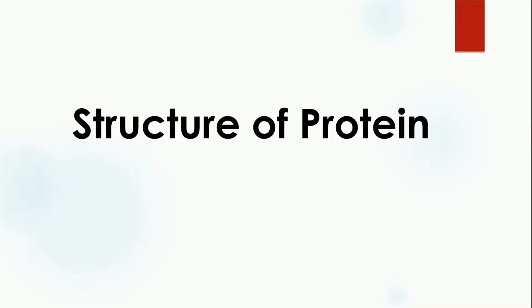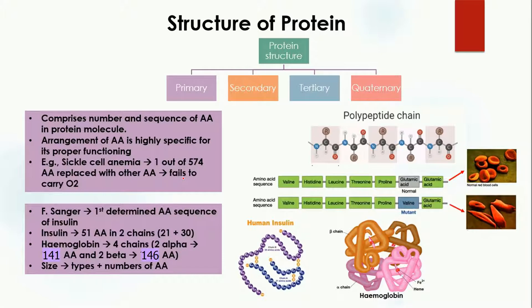Hello nerds, today's topic is about the structure of protein. We have already studied about the functions of protein and the structure of amino acids which combine together to form proteins. I will share the video link in the description and in the i-button. Today we are going to study the different levels of organization of proteins. There are four levels of protein structure: primary, secondary, tertiary, and quaternary.